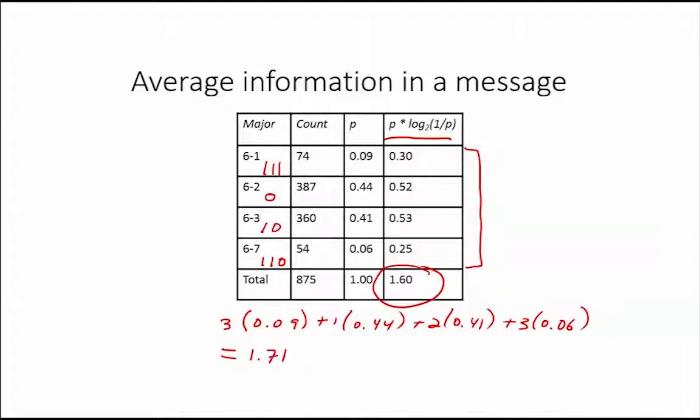Note that this is slightly larger than the entropy which is 1.6. This occurs because while Huffman encoding is an efficient encoding which gets us most of the way there, there are still some inefficiencies present in Huffman encoding because it is only encoding one major at a time, rather than also considering the probabilities associated with seeing a particular sequence of majors in a message that conveys the major selected for a large number of students.